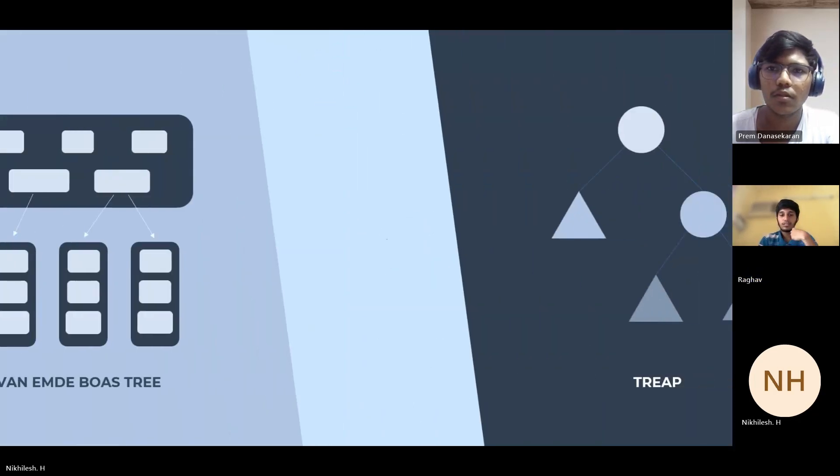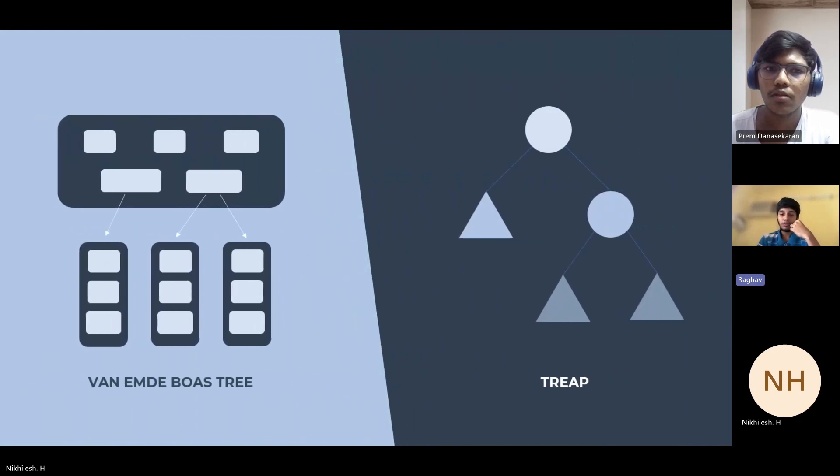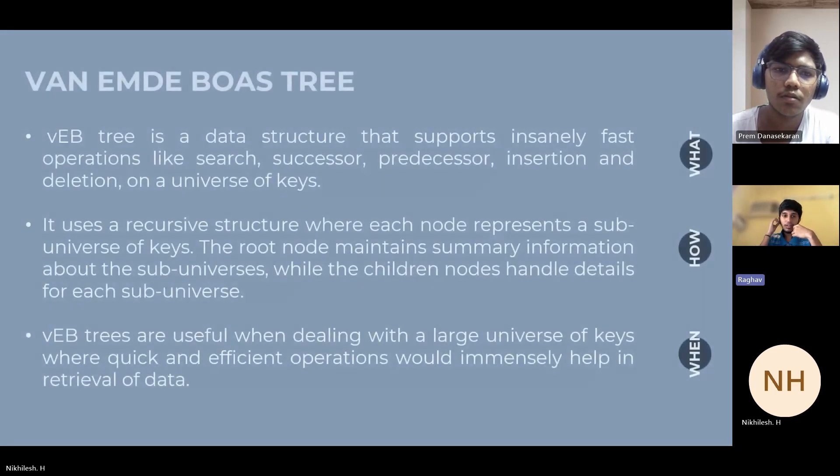Starting off with the Van Emde Boas tree, or vEB tree. vEB tree is a specialized data structure that optimizes operations like insertion, deletion, search, and predecessor. It's basically a recursive data structure where you have an array, also known as a universe, and you have nodes which are tree nodes.